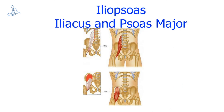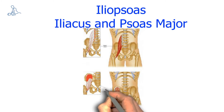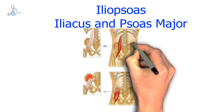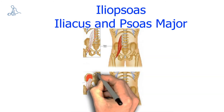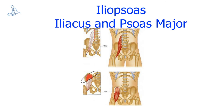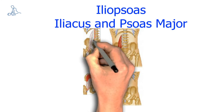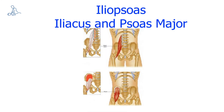The iliopsoas is made up of two muscles: the iliacus and the psoas major. The origin of the iliacus is the iliac fossa. The origin of the psoas major is the transverse processes of T12 to L5 and the lateral lumbar discs. The insertion of these muscles is the lesser trochanter of the femur. The action of the iliopsoas muscles is to flex and laterally rotate the thigh, flex the lumbar spine and produce anterior tilt of the pelvis.